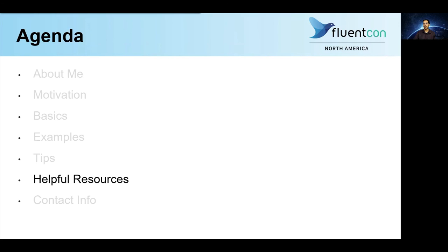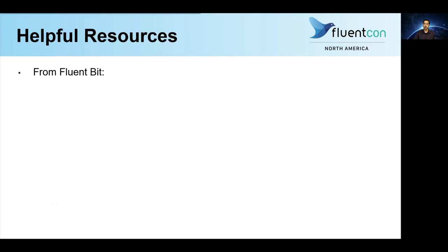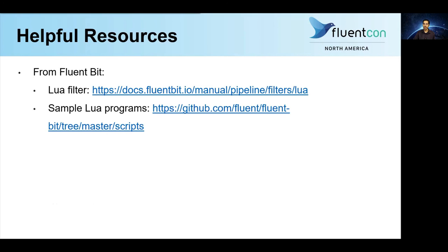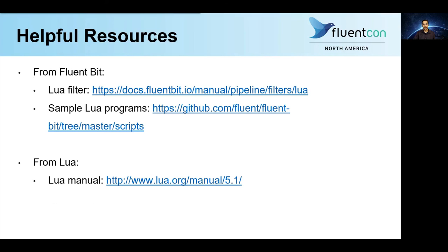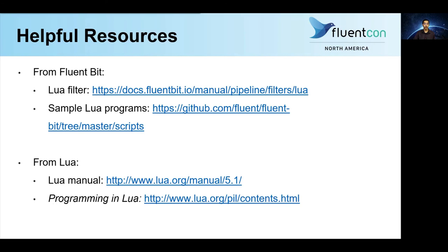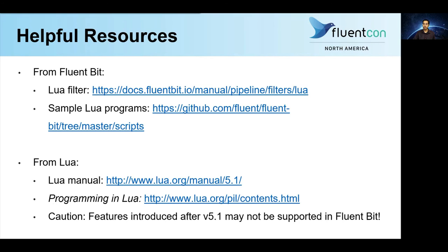Moving on, let's talk about some helpful resources that you can use to build upon this talk and to dive deeper into the areas that you're interested in. From the Fluent Bit side, you have the Lua filter documentation and some sample Lua programs. From the Lua side, you have the official Lua manual, but personally I recommend starting with the 'Programming in Lua' book written by one of the creators of Lua, as that provides a much friendlier introduction to Lua than the manual does. One thing to keep in mind when consulting Lua documentation is that although Lua itself is now on version 5.4, Fluent Bit's distribution of Lua is limited to version 5.1 — because Fluent Bit doesn't embed native Lua; instead it embeds LuaJIT, which is essentially a fork of Lua frozen at version 5.1 with a few newer features backported. So before you incorporate features introduced in newer versions of Lua into your code, make sure that there's support on Fluent Bit.